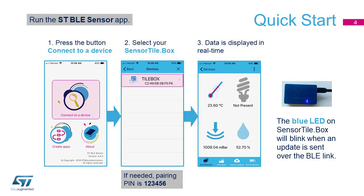Install the STBLE Sensor app on your smartphone from its Play Store. Run it and select the option Connect to a Device. In the list of recognized devices, you should see TileBox. If not, please connect your device to your phone via the micro USB port. If TileBox is visible, tap on it.